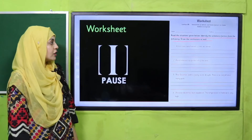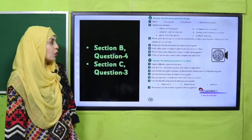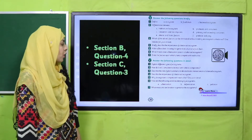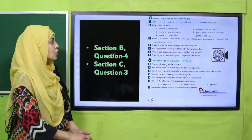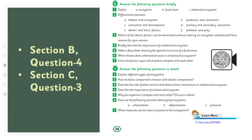Now we will move forward to your homework. Please note down: Section B, question number 4 — briefly describe the importance of a balanced ecosystem. Section C, question number 3 — describe the role of plants, animals, and biotic and abiotic interaction in a balanced ecosystem. Complete it and submit it as your homework.